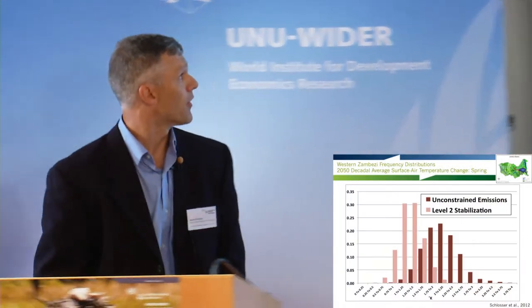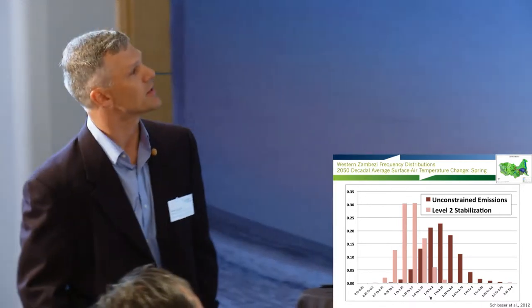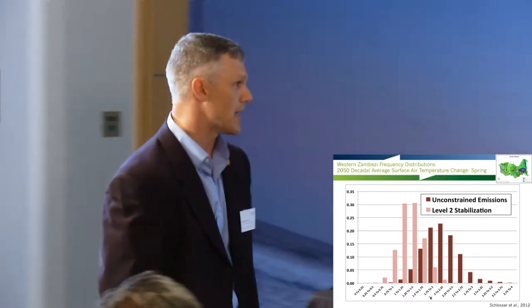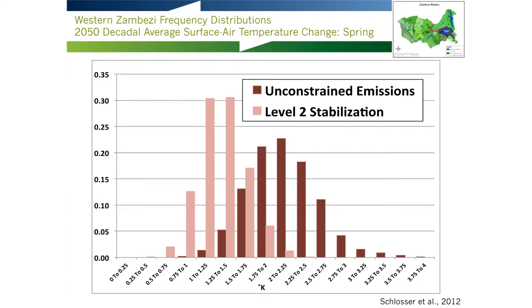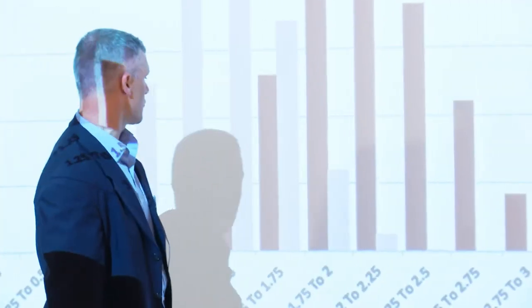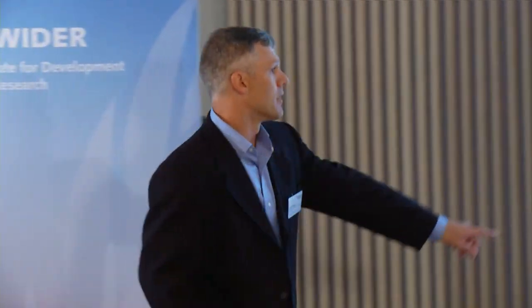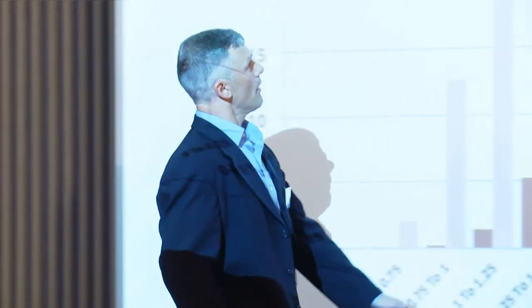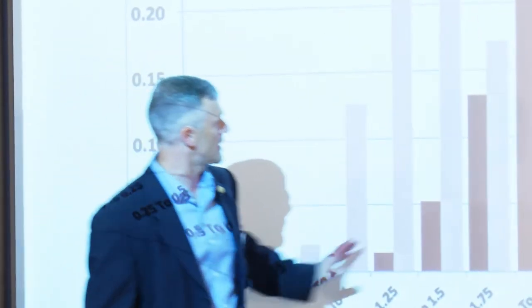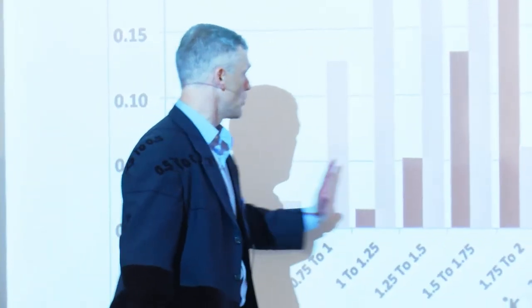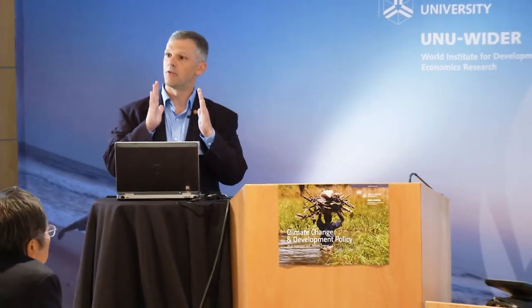Here is a result for the western Zambezi basin: changes in temperature by the middle of this century for the unconstrained emissions case and the level two stabilization. Everything on the x-axis is greater than zero, so everything's warming. For the unconstrained emission scenario we see a distribution with a mode of about two degrees Celsius and very small chances of warming on the order of four degrees Celsius — a pretty big temperature increase. Encouragingly, for the level two stabilization scenario we essentially take this unconstrained emissions result and move the entire distribution to the lower half — everything to the right of the central tendency of the unconstrained distribution is essentially not possible under level two stabilization — with a substantial decrease in the mode and a shrinking of the range.